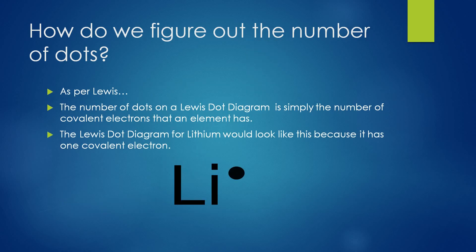As per Lewis, the number of dots on a Lewis dot diagram is simply the number of valence electrons that an element has. The Lewis dot diagram for lithium would look like this, because it has one valence electron.